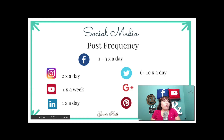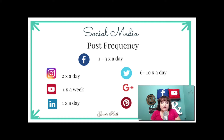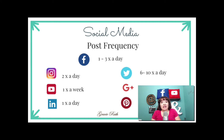People ask me when is the right time to post, or the frequency for each platform. Each platform works differently. The frequency for Facebook is one to three times a day — if you can do more, that is better. Instagram is twice a day; if you do more than that, it becomes spam. Twitter is five to six, or six to ten times a day.